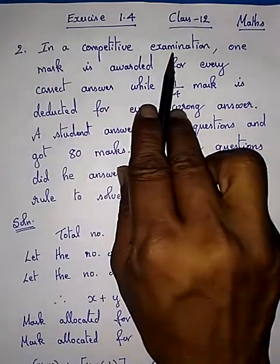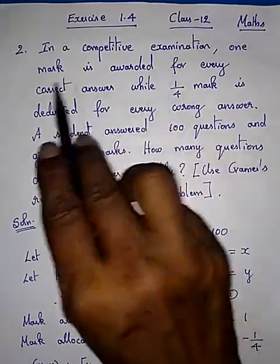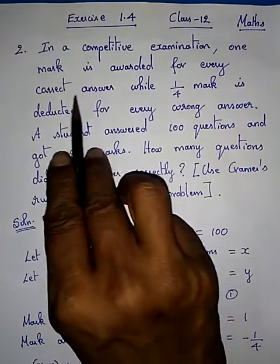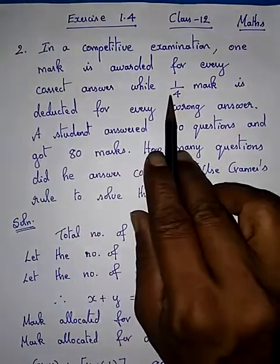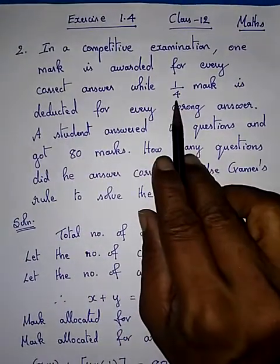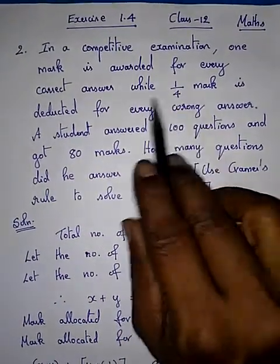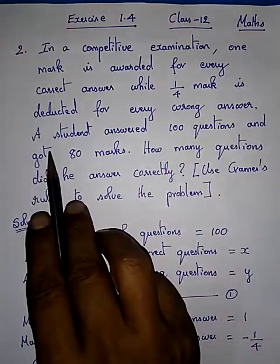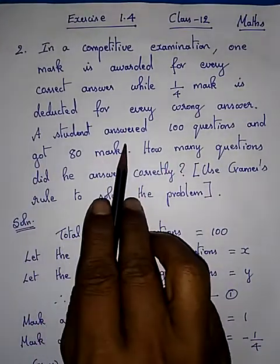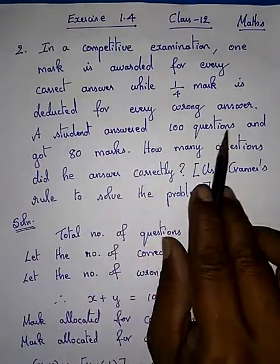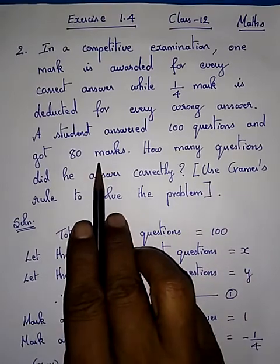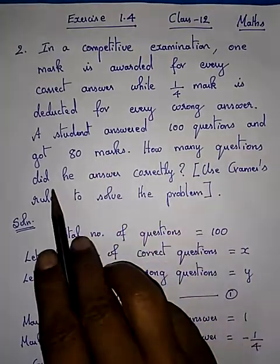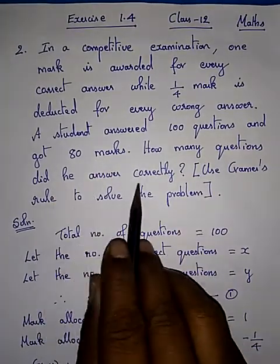In a competitive examination, one mark is awarded for every correct answer, while one-quarter mark is deducted for every wrong answer. A student answered 100 questions and got 80 marks. How many questions did he answer correctly?